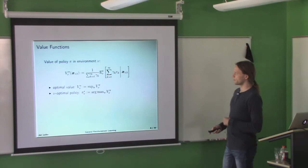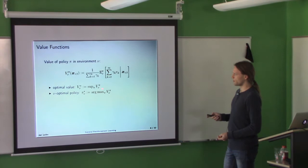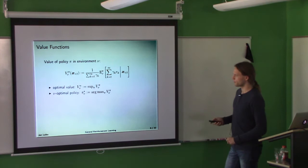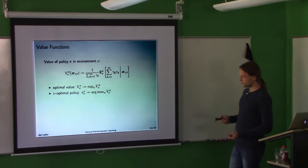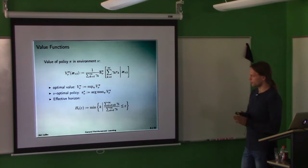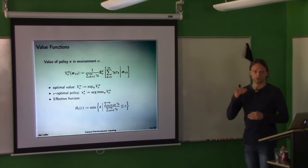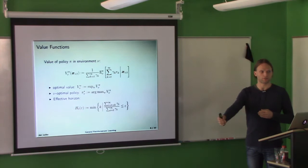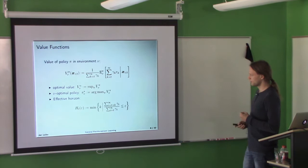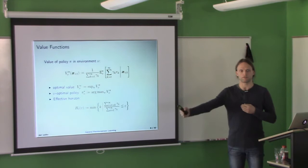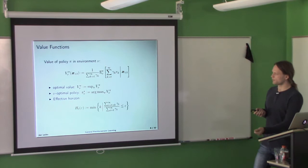We can define the optimal value as the value of the optimal policy — the supremum is actually a maximum, and there is a policy that achieves it, which I call the μ-optimal policy. One other ingredient we need is the effective horizon: at time t, it's the number of time steps you need to plan ahead to get all but epsilon of your discount function's mass. For geometric discounting, this effective horizon is constant.